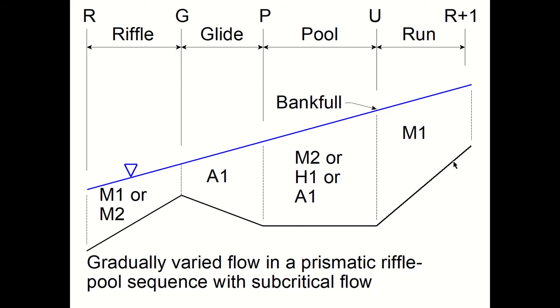So you can have three types of gradually varied flow curves there: the M2 if the slope would be normally going down gradient, or H1 if it's a horizontal slope, or A1 if it's an adverse slope.